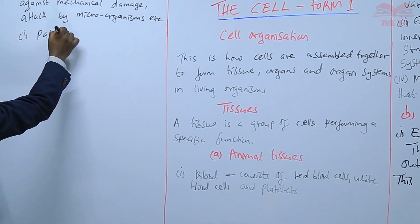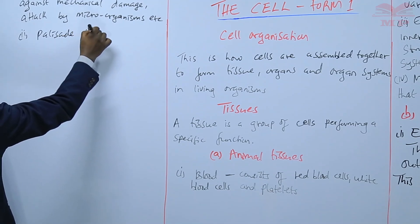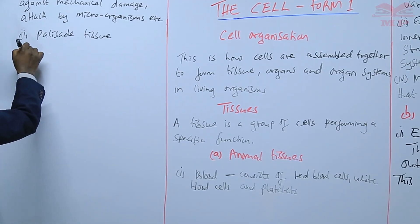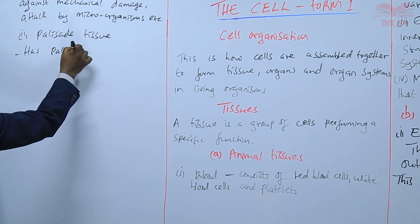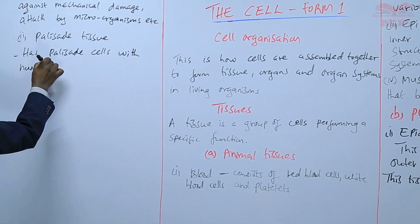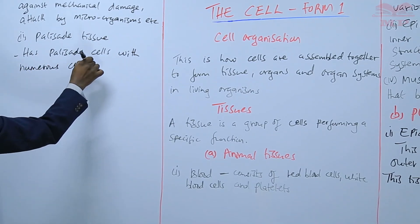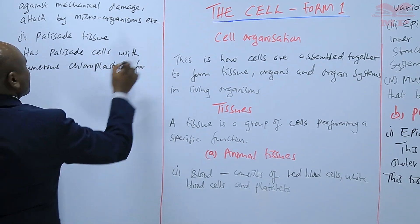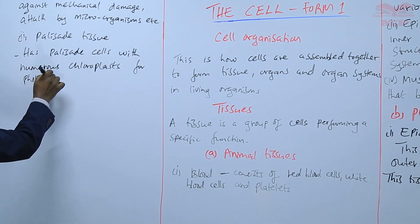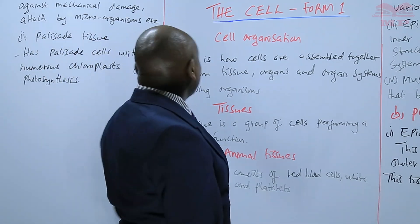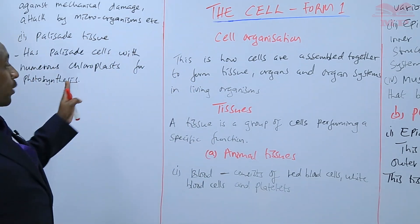Another plant tissue is palisade tissue. This is made of palisade cells that we learnt earlier, and the palisade tissue has palisade cells with numerous chloroplasts for photosynthesis. This tissue is found in the leaves and it is the main area where photosynthesis occurs.